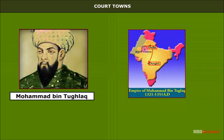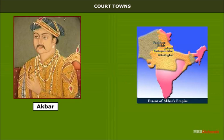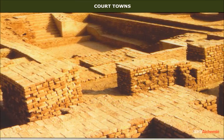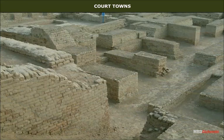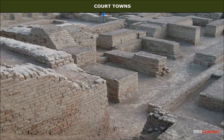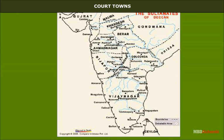Akbar shifted his capital from Agra to Fatehpur Sikri in 1571. Some of the important towns in the Indus Valley were Harappa and Mohenjo-daro, Indraprastha and Ayodhya of the Vedic period in the Gangetic Plains, and Rajgriha, Avanti, Kosala and Ujjain of the Mahajanapada period. In South India, Madurai, Thanjavur, Badami, Kanchi, Vengi, etc. were capital towns of different dynasties.